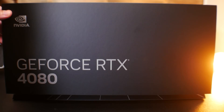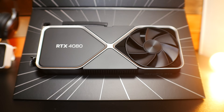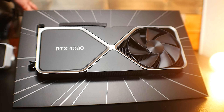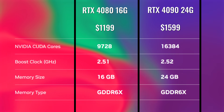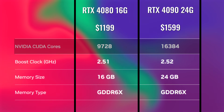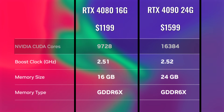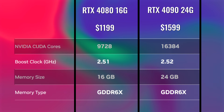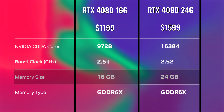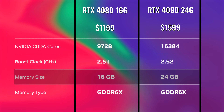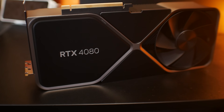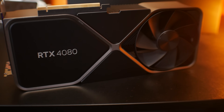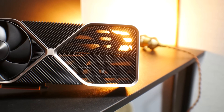Welcome to Tech Yes City. Today we're reviewing the RTX 4080 16GB, which starts from $1,199 USD. On the surface, looking at the specs, there's a massive difference in shader count between the 4080 and the 4090, and the 4090 also has 50% more VRAM with 24GB versus 16GB. So on the surface, the RTX 4090 looks like better value at $1,599, especially for high refresh rate 4K gaming.